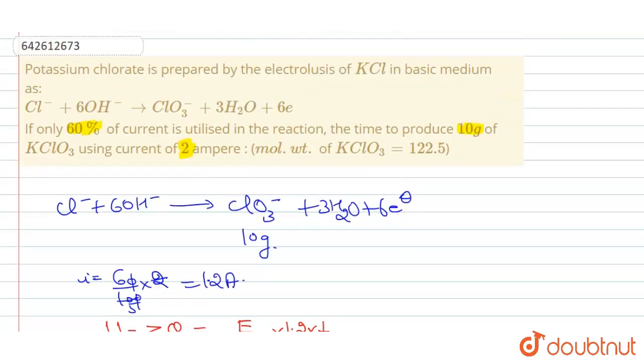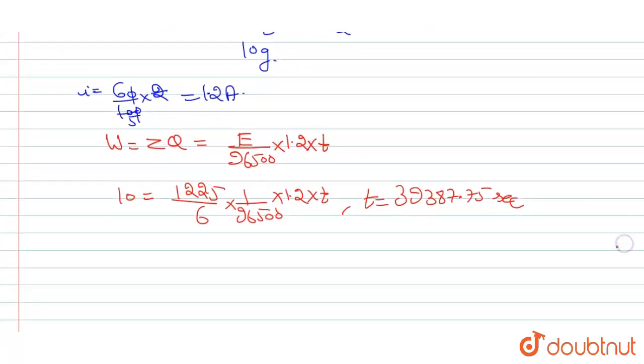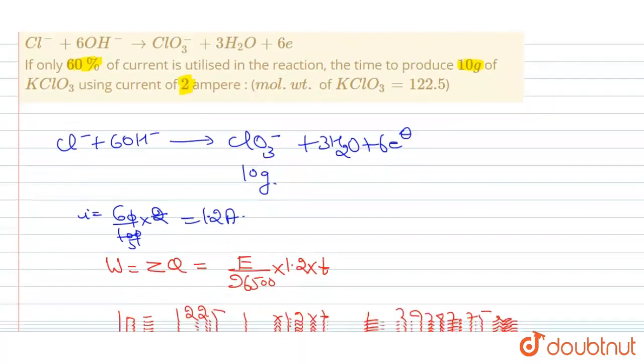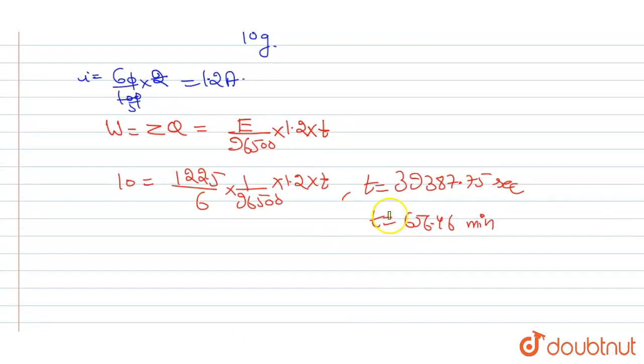How much time is required? That is 39387.7 seconds. If we divide by 60, that will be in minutes, equals to 656.46 minutes. So the final answer for the question is: time required to produce 10 gram of KClO3 equals to 656.46 minutes.